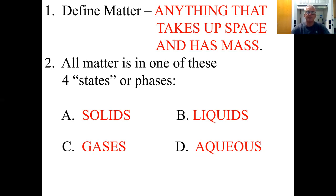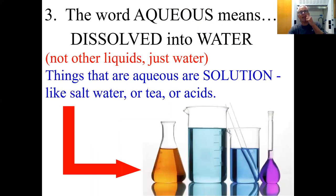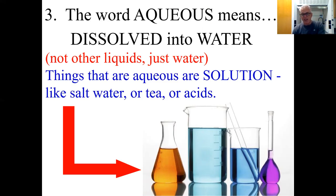Some people also ask about plasma. Plasma is one of those theoretical physical things — fire is a plasma, it's energy, it apparently takes up space but doesn't seem to have any real volume. We're not going to talk about plasma. We'll stick with solid, liquid, gas, and aqueous. Aqueous means dissolved into water — not other liquids. So things like salty water, tea, coffee, acids, bases, sugar water, soda pop — those are called aqueous solutions, where one thing is dissolved into water.